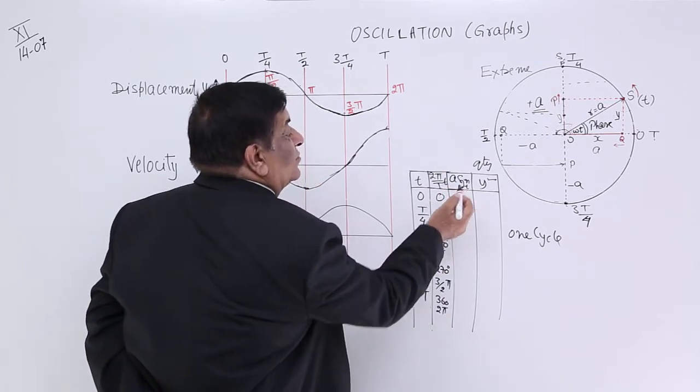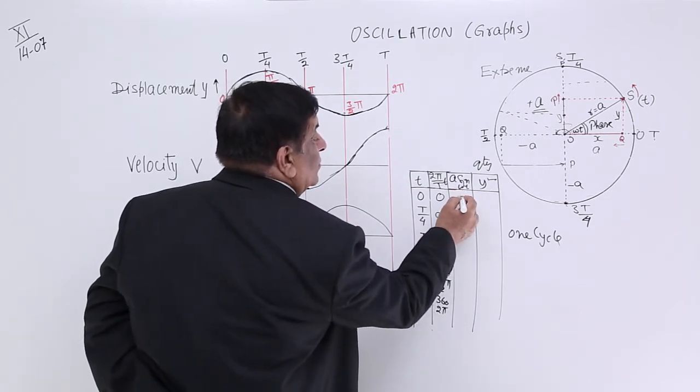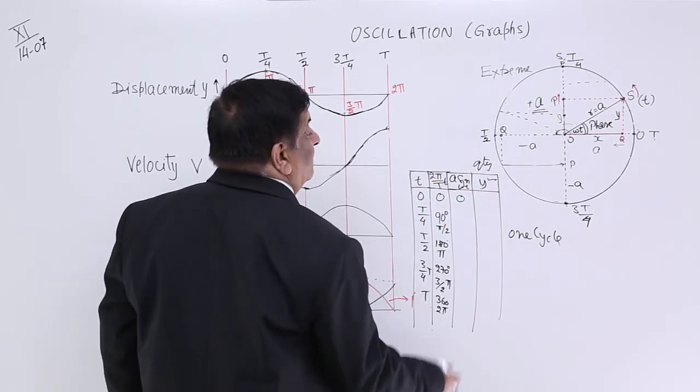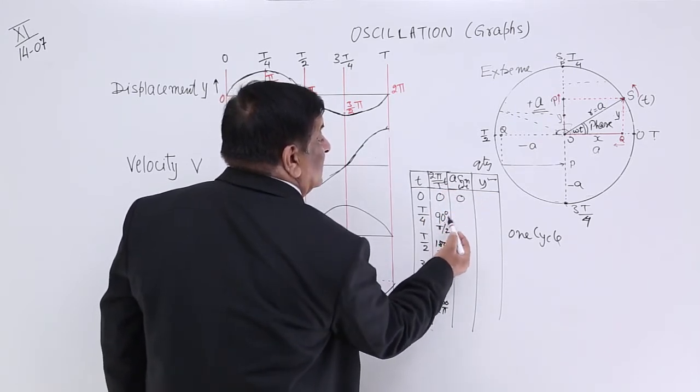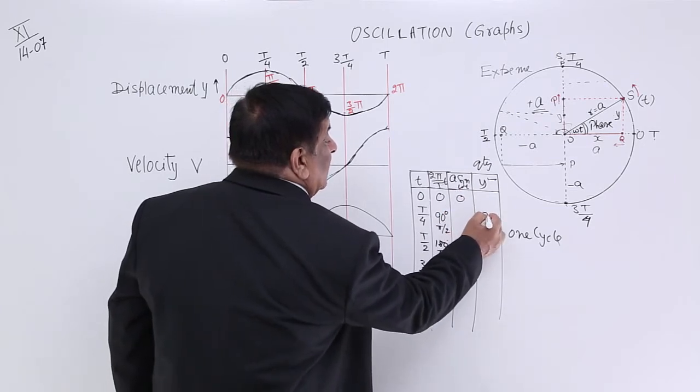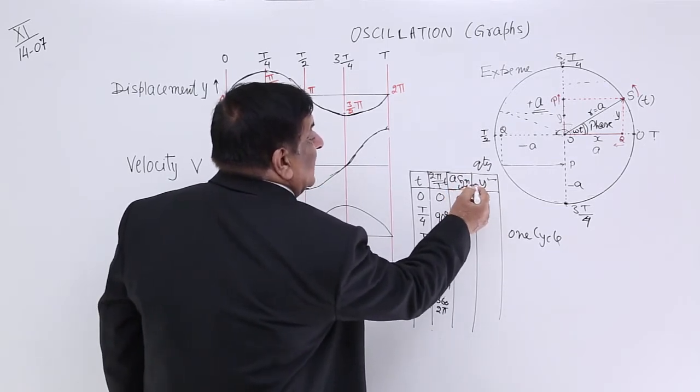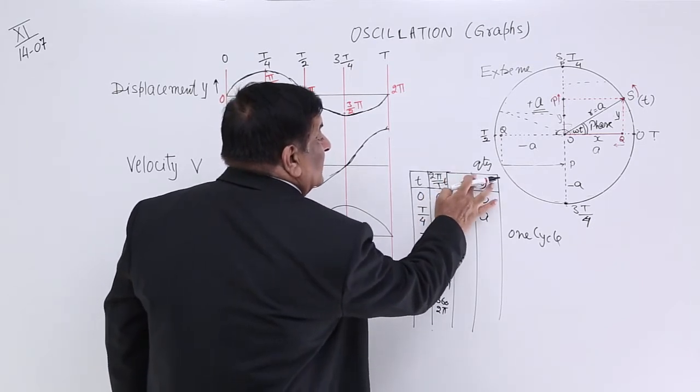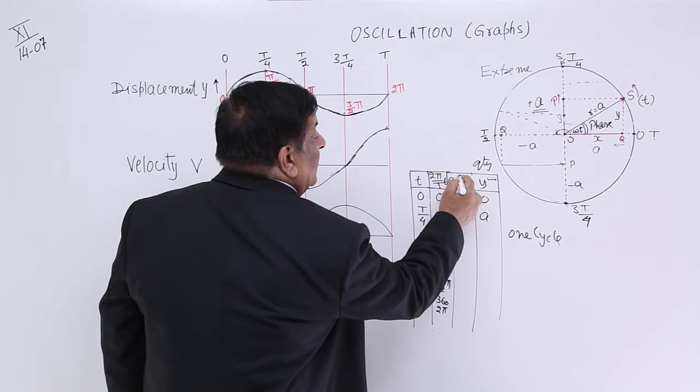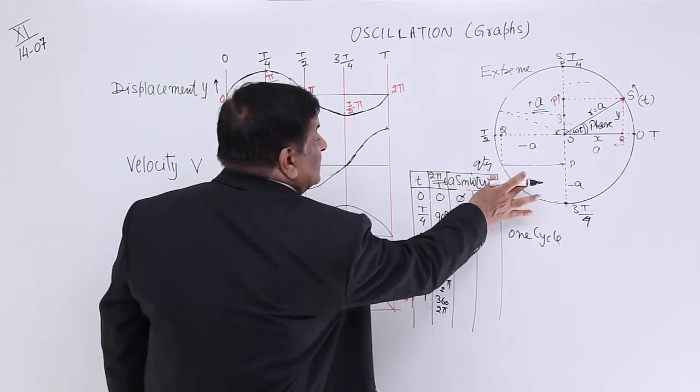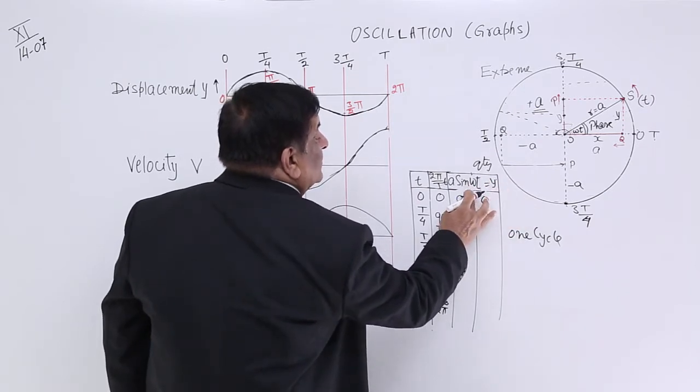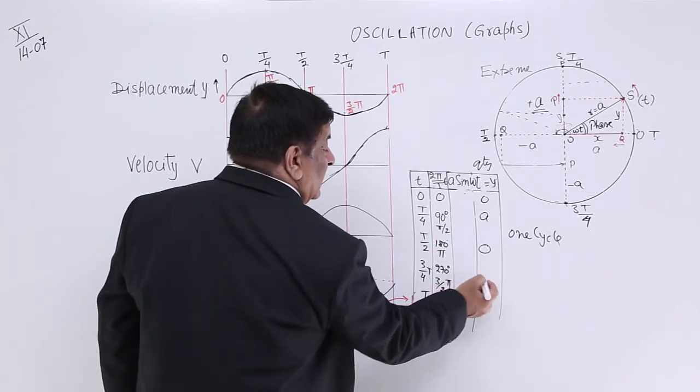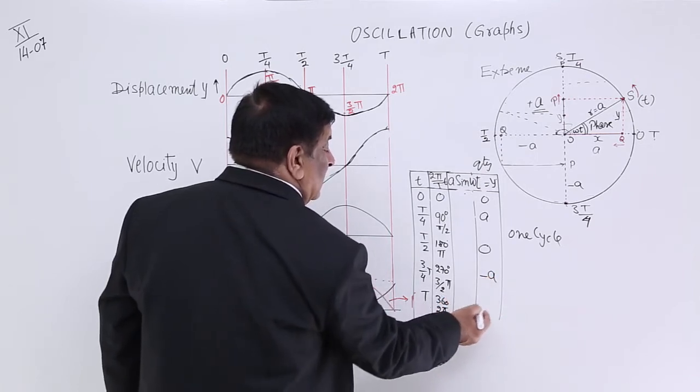Now we find A into sin omega t. Sin of 0 degree is 0, so this is 0. At 90 degrees, sin 90 is equal to 1, so this is A. At 180 degrees, this is again 0. At 270 degrees, it's minus A. And at 360 degrees, it is again 0.